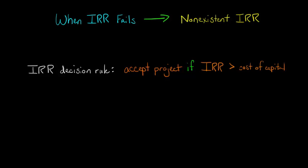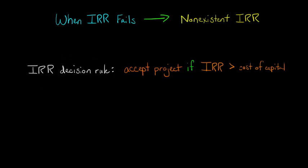The internal rate of return is a very useful decision rule in deciding whether or not to accept a project at a firm. But in some cases, we don't even have an IRR — it's non-existent. There is no IRR for the cash flows of a given project, and in those cases, we have to use the net present value.